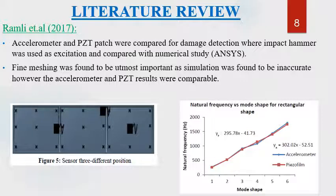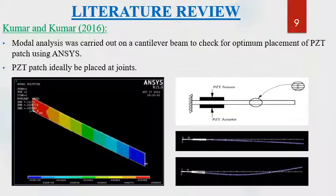Ramli et al. in 2017 compared accelerometer and PZT patch for damage detection where impact hammer was used as excitation. Results were compared with a numerical study done on ANSYS, and it was concluded that fine tracing was most important and results obtained using accelerometer and PZT were comparable. Kumar and Kumar carried out modal analysis on a cantilever beam to check optimum placement of PZT patch using ANSYS, concluding that PZT should be placed at the maximum strain location, that is at the joint in the case of a cantilever.